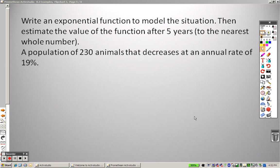Alright, we're on exponential decay. This is 8.2 and we are talking about some depreciation. Now we just talked about graphing, so let's talk about depreciation. Basically what this is saying is, write an exponential function to model the situation, then estimate the value of the function after 5 years. Population has 230 animals that decrease. Now, this is what we were doing.